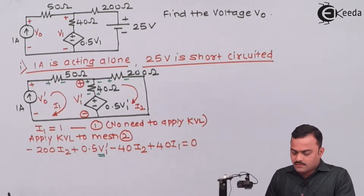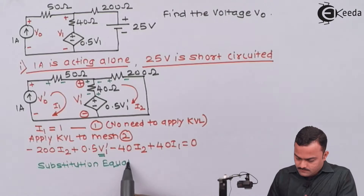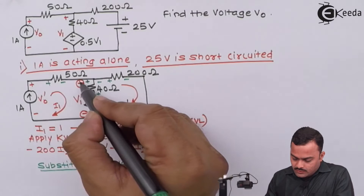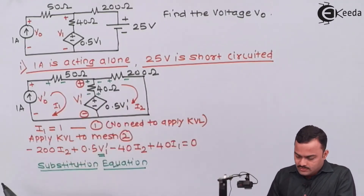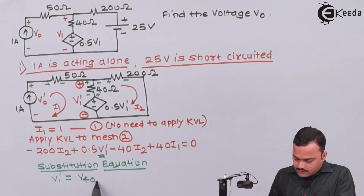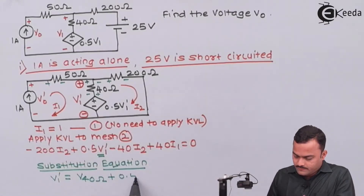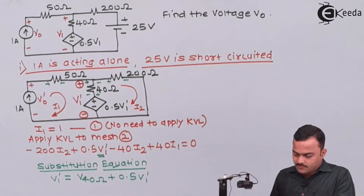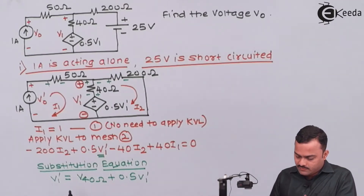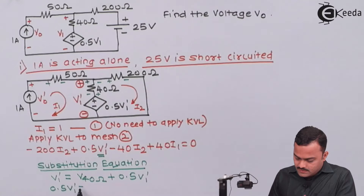We need a substitution for V1'. V1' is the voltage across the branch which consists of two elements. V1' is the addition of two voltages: one is across the 40 ohm resistor and the second is across the dependent voltage source which is 0.5 V1'. So V1' minus 0.5 V1' gives 0.5 V1', which equals the voltage across the 40 ohm resistor.